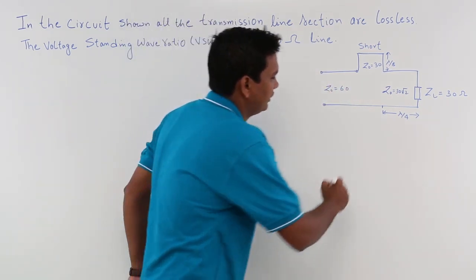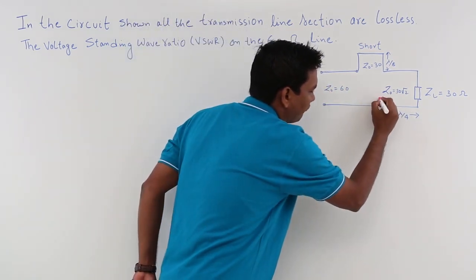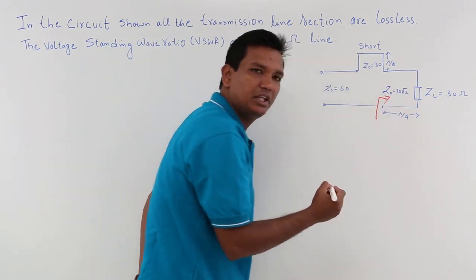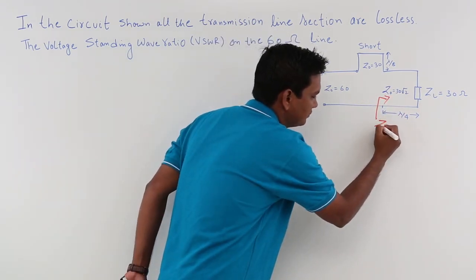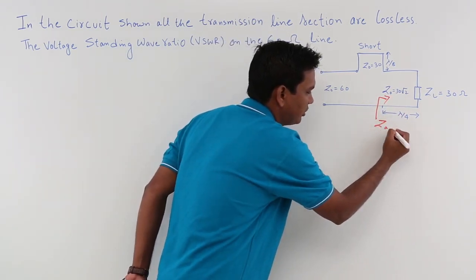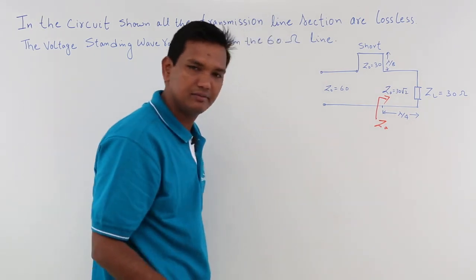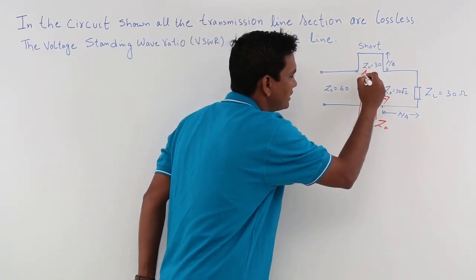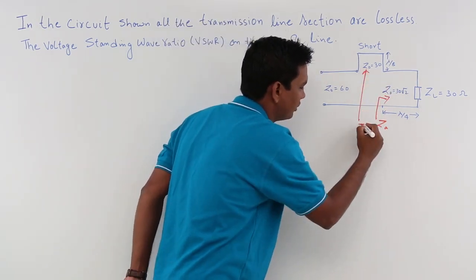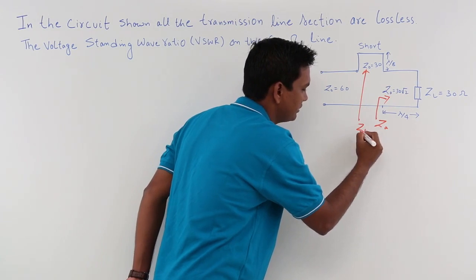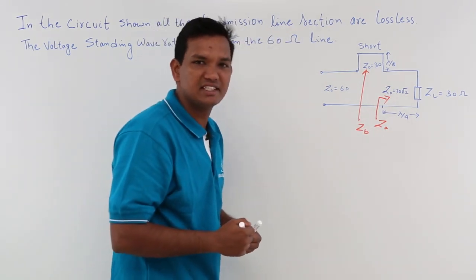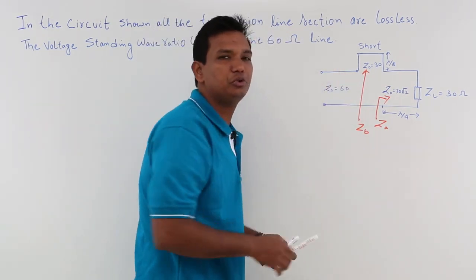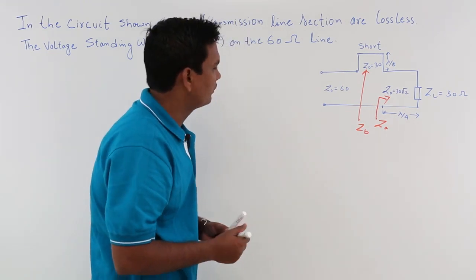We are going to solve in this way: I am going to find the input impedance at one point, let me call it ZA, and I am going to find the input impedance at another point, let me call it ZB. Once I have ZA and ZB, then I will proceed with this problem.